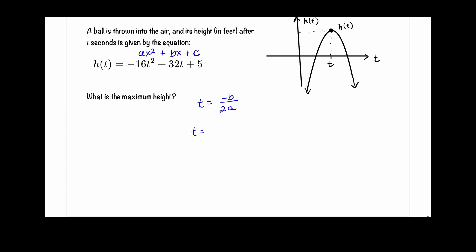We get t is equal to negative b, which is 32, divided by 2 times negative 16. That gives us negative 32 over negative 32, which is equal to 1. When t is equal to 1, that is when we get our maximum height.